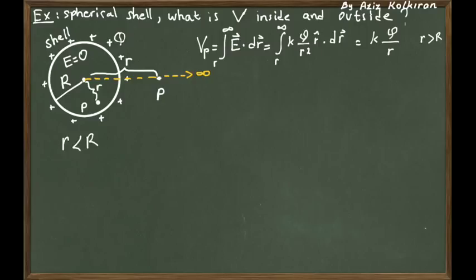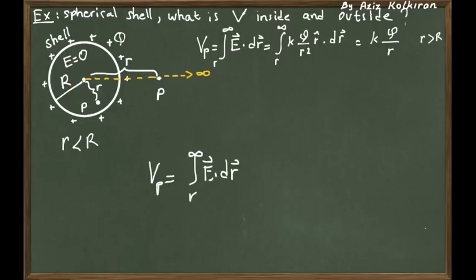Next we will take a point inside the shell. Again, let's call the distance to the center as small r, but this time r is less than capital R, which is the radius of the shell. We will use the same definition and calculate the potential using the line integral of the electric field from this point r to infinity.